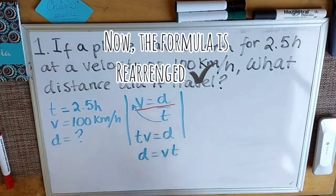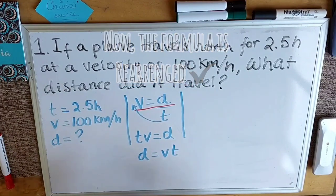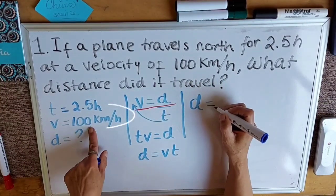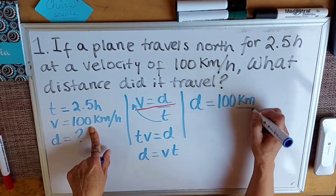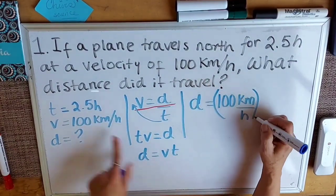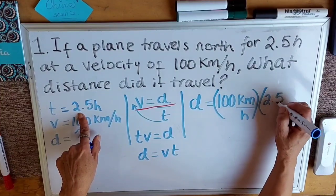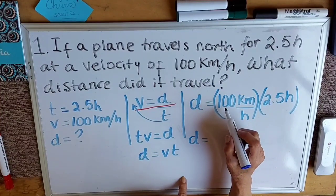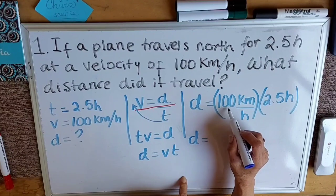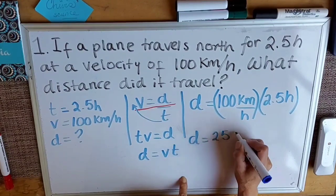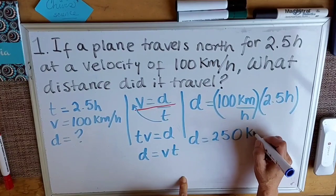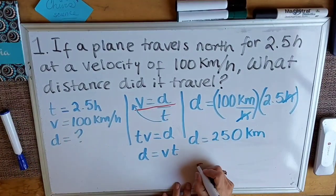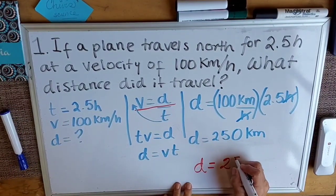The formula is now rearranged. Moving on to substitution: distance equals velocity times time, so distance equals 100 kilometers per hour times 2.5 hours. We do this multiplication — remember when multiplying by 100 we move the decimal point two places — and the result of this problem is distance equals 250 kilometers.